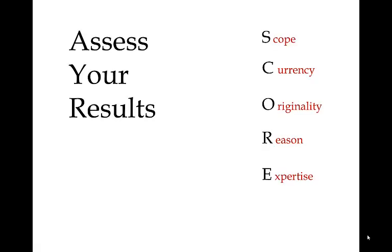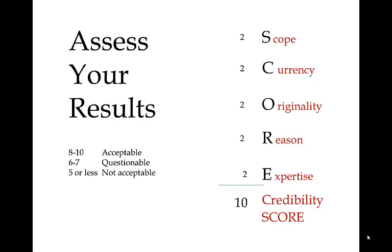As you score your results for each resource, simply write S-C-O-R-E vertically in a blank area of the record, which includes the citation and the abstract. For each of the factors, write the resulting score for your resource, then add them together for a credibility score. Each resource has a possibility of earning a credibility score of ten points. If you think about this as a grade for each resource, most references that get at least an eight are acceptable. Those that score six or seven are questionable and should be reviewed again about whether they should be used for your college-level research project. Those that get five or less points have a low credibility score and probably should not be used.